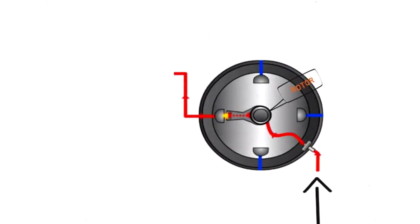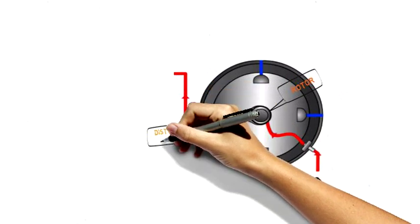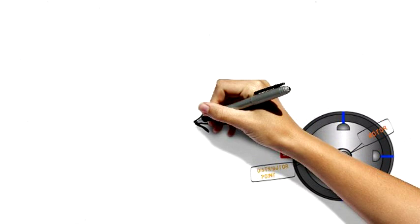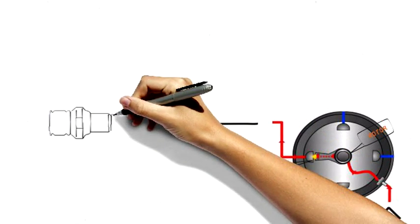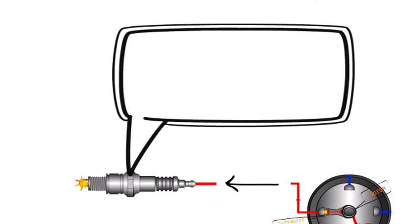The rotor inside the distributor rotates according to the ignition timing. When the rotor touches a distributor point, the voltage jumps due to the air gap from the rotor to the point. High voltage is then transferred from the distributor to the spark plug terminal.